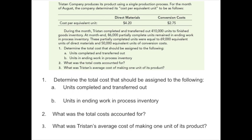We need to determine the total cost assigned to: units completed and transferred out, and units in ending work in process inventory. Then we should find the total cost to account for, and Tristan's average cost of making one unit of product. Push pause on your player and attempt this problem.